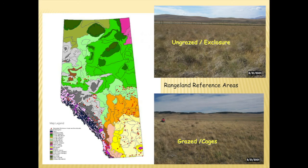An important source of reference data is our rangeland reference area program. We're the only province that has anything quite like this — we have 182 sites across the province, 120 of them in the grasslands. The upper right picture shows an ungrazed reference area; lower right is a grazed area, usually grazed at light to moderate rates, and we have agronomy cages there to measure annual forage production. We monitor species composition every third year and productivity on an annual basis. This is really important long-term data for classification.